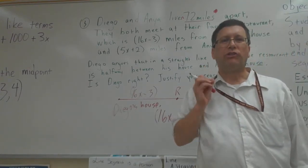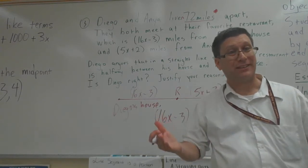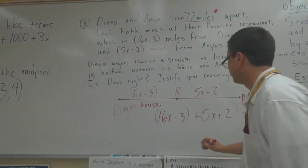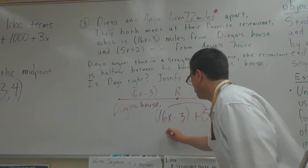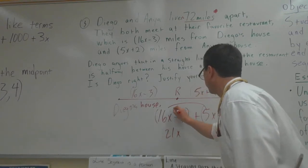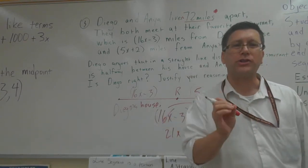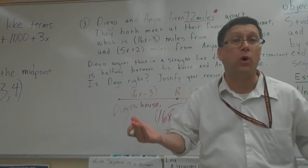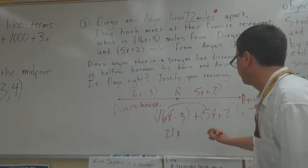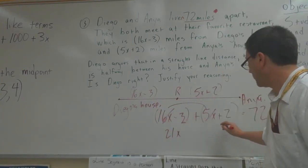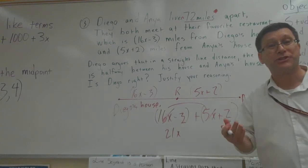So what we do is collect like terms. X's with x's, numbers with numbers. 21x. Always cross out. The reason I cross out is I won't get confused to use it again. Negative 3 and a 2. What's a negative 3 plus 2 is negative 1.